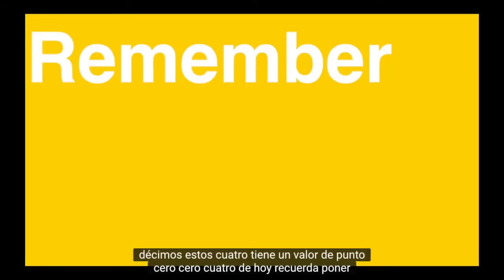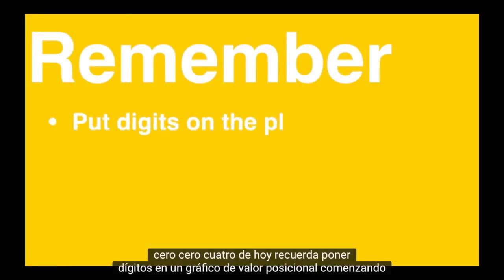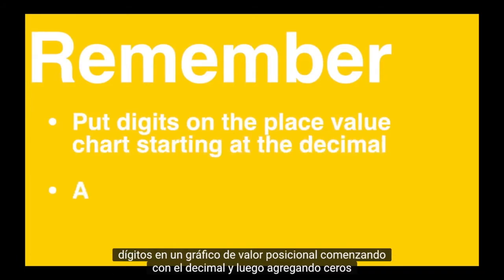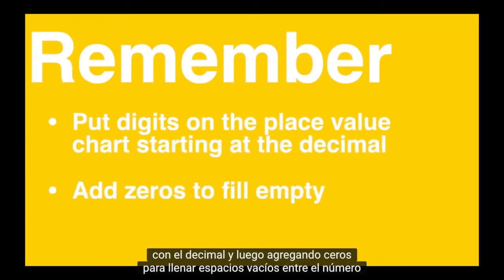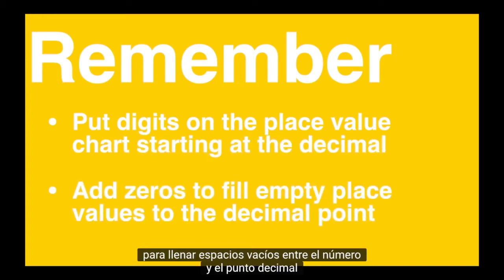From today, remember: put digits on a place value chart starting with the decimal, and then add in zeros to fill empty spaces between the number and the decimal point.